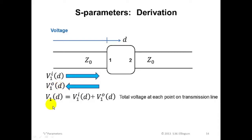Now, the total voltage as a function of d along the transmission line is given by the sum of these two things, as I've indicated here.